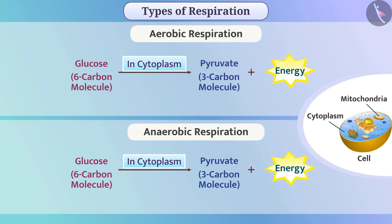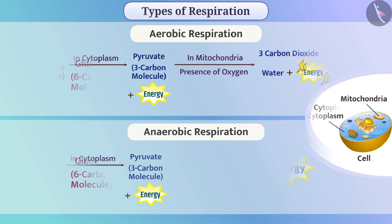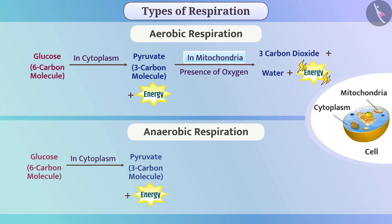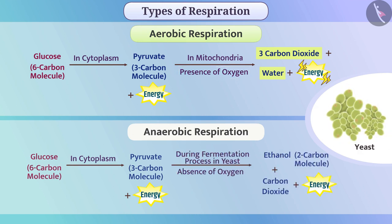Energy can be produced from the pyruvate molecules but the method of production may vary. For example, in the cell organelle called mitochondria, in the presence of oxygen, a molecule of pyruvate is broken down into 3 molecules of carbon dioxide and water, and thus energy is produced — this is aerobic respiration. Organisms such as yeast use the process called fermentation, in which pyruvate is broken down into ethanol and carbon dioxide, and energy is produced. Due to the formation of energy in the absence of oxygen, this respiration is anaerobic respiration.